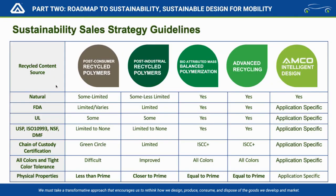This simplistic sales strategy guideline covers the different sources of materials and how we begin a transformative approach to differentiated technologies. There are multiple technologies available today, but there are limitations — whether it's post-consumer or post-industrial recycled polymers, they have different attributes. For custom tight-tolerance applications with differentiated requirements, using 100% post-consumer recycled can be difficult. That's why we need multiple buckets and different pathways, then move forward to bio-attributed or advanced molecular recycled materials.